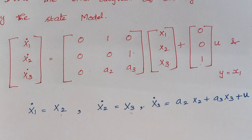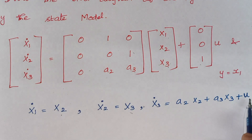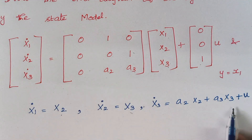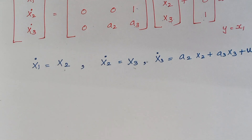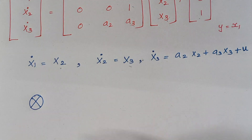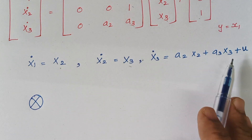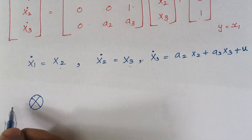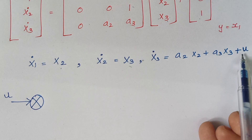Now we are going to draw the block diagram. You first start with the expression which has addition in it, since addition represents that there is a summer. So I am going to draw this summer. To this summer, how many inputs are there? We have three terms here, which indicates three inputs. Let the first input be u with a plus sign.